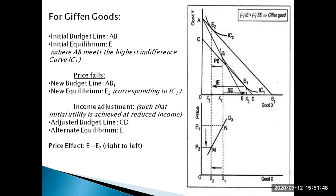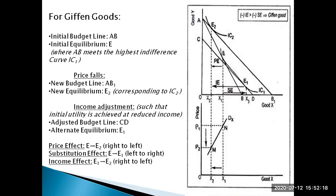Decomposing this price effect: the substitution effect still moves the individual from E to E1 in the rightward direction — increasing consumption of good X — just as with normal goods. However, the income effect is so strong that it pulls the individual back to the left, from E1 to E2, completely nullifying and overpowering the substitution effect. The net movement is leftward, from E to E2. This is the key difference: for giffen goods, the income effect is stronger than the substitution effect.